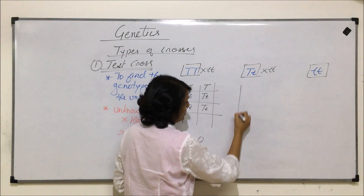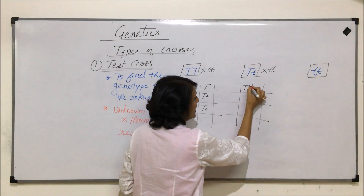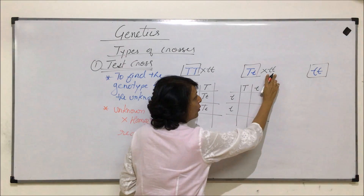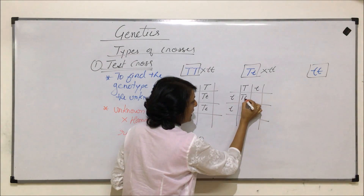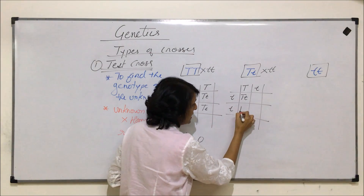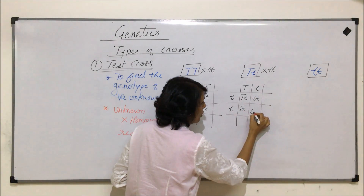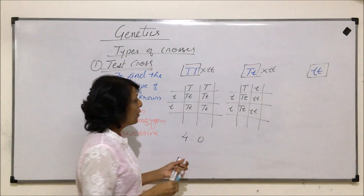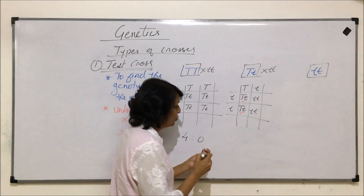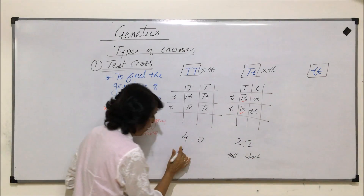For the second case, we cross the heterozygous unknown with the homozygous recessive parent. The gametes produced by the heterozygous plant would be one capital T and one lowercase t — one dominant, one recessive — and on the other side both recessive. The offspring will be heterozygous for two and homozygous recessive for two. So two are tall and two are short — the ratio is two is to two.